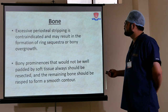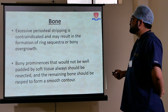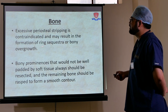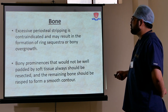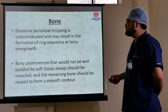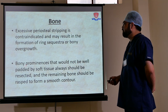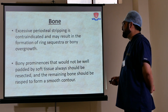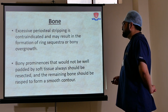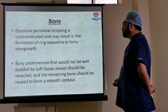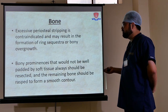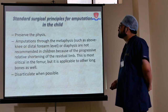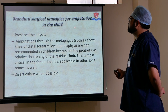Bones: excessive periosteal stripping is contraindicated and may result in the formation of a ring sequestrum or bony overgrowth. Bony prominences that would not be well padded by soft tissue should always be resected, and the remaining bone should be rasped to form a smooth contour so that the patient will not feel pain.